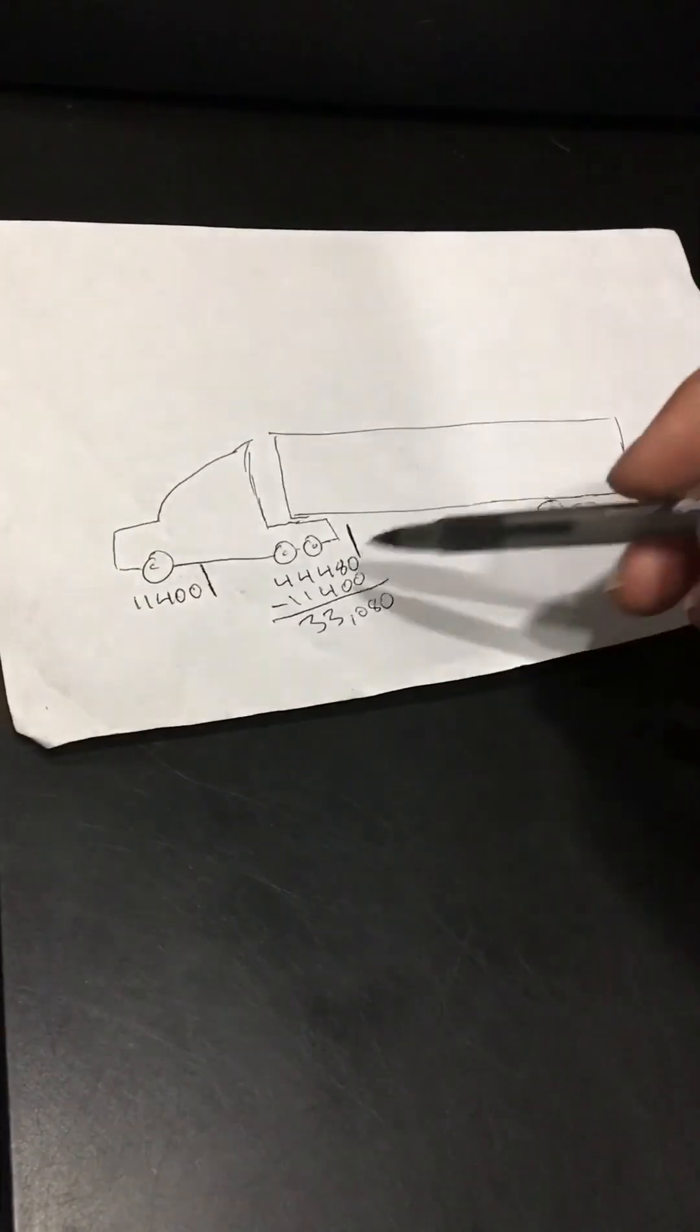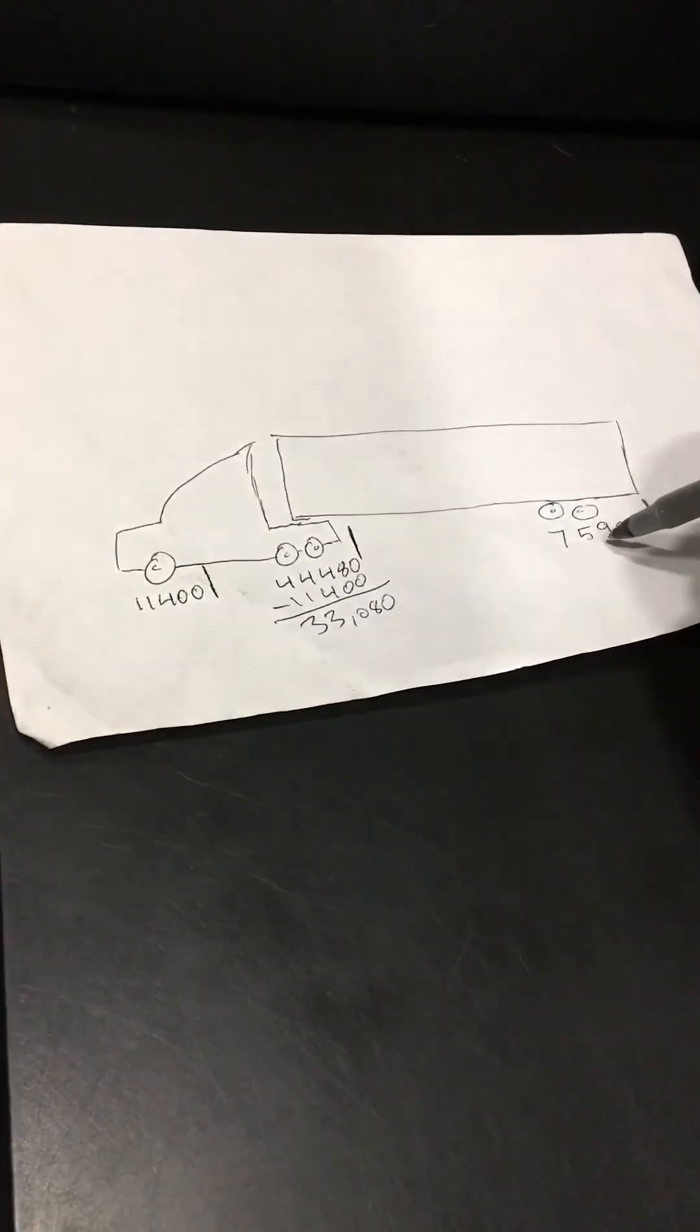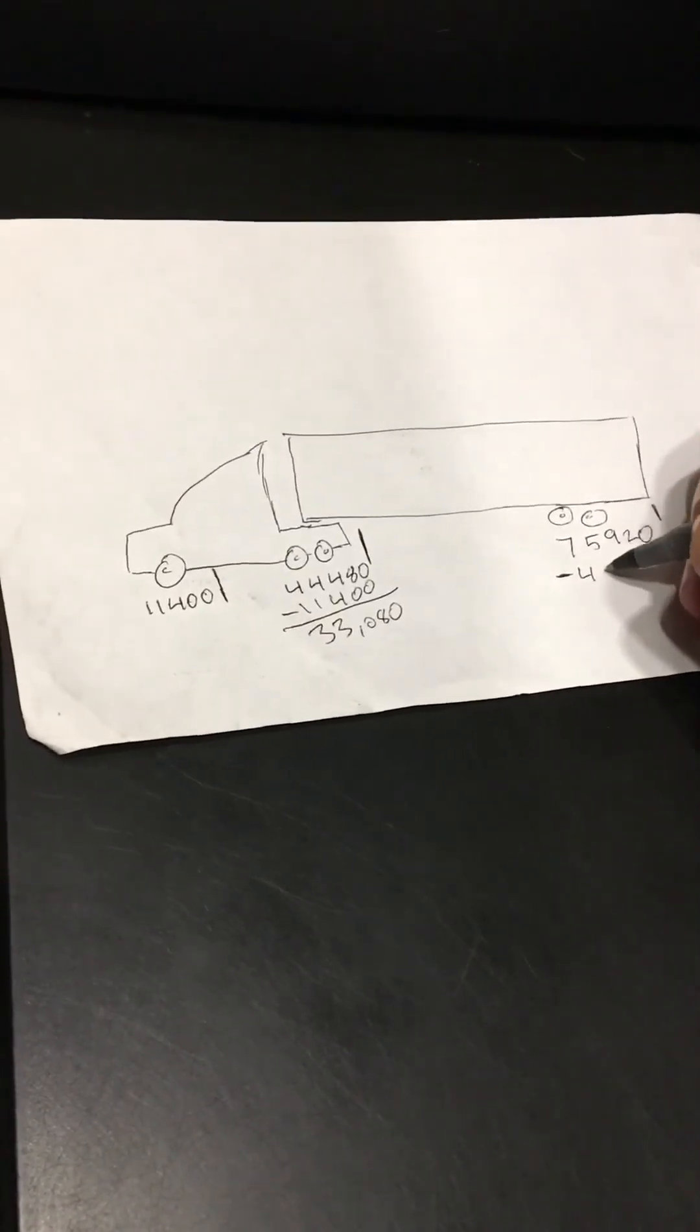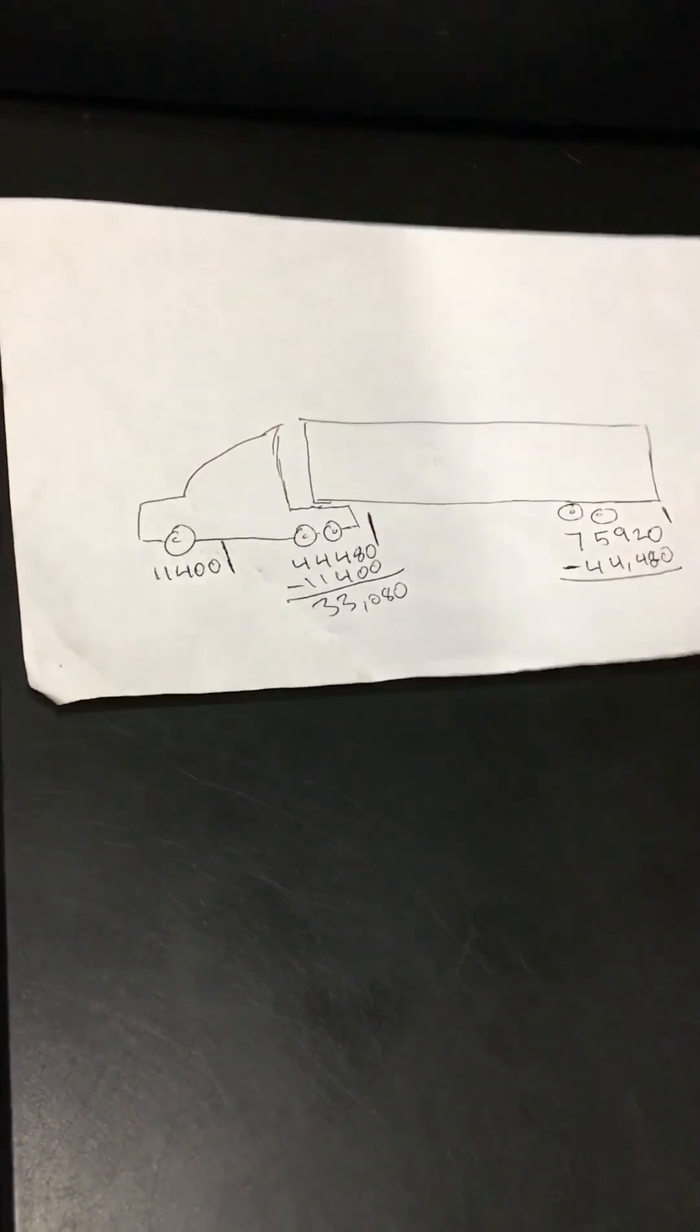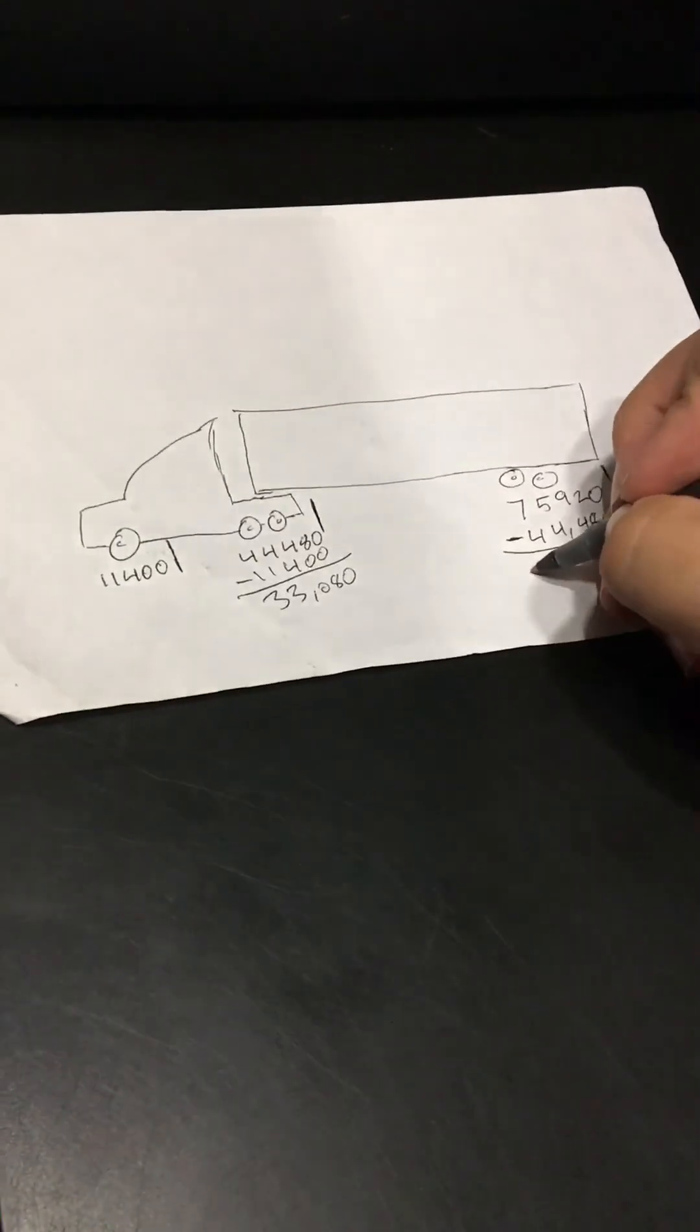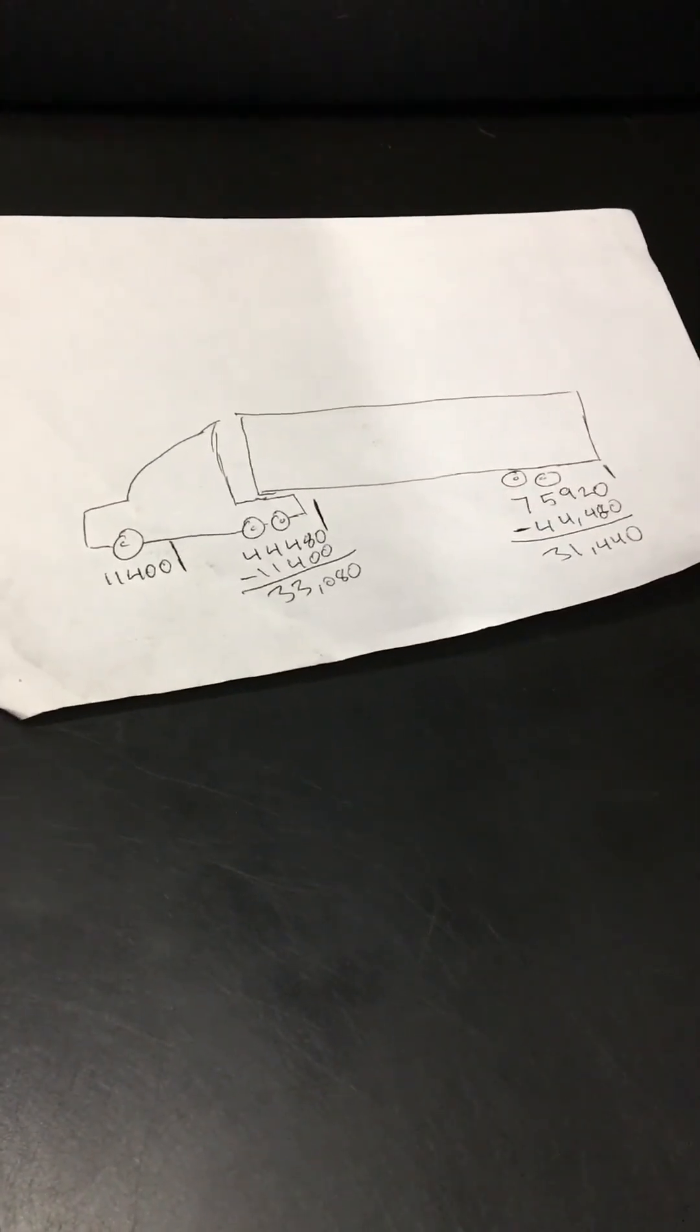The whole weight of the truck was 44,480. So 75,920 minus the weight of the truck will give you the axles on the rear. There you go.